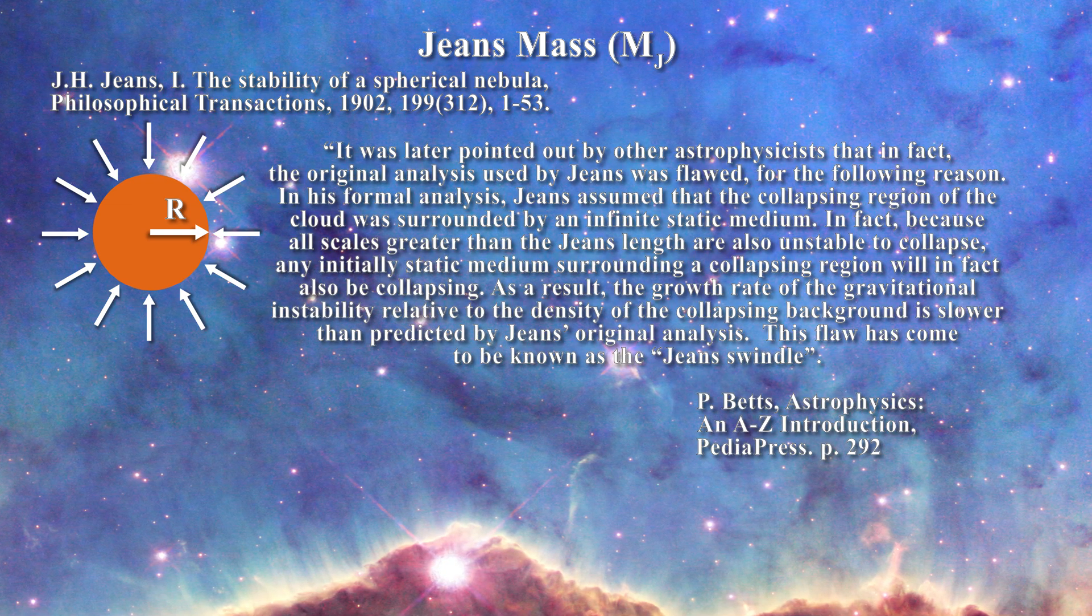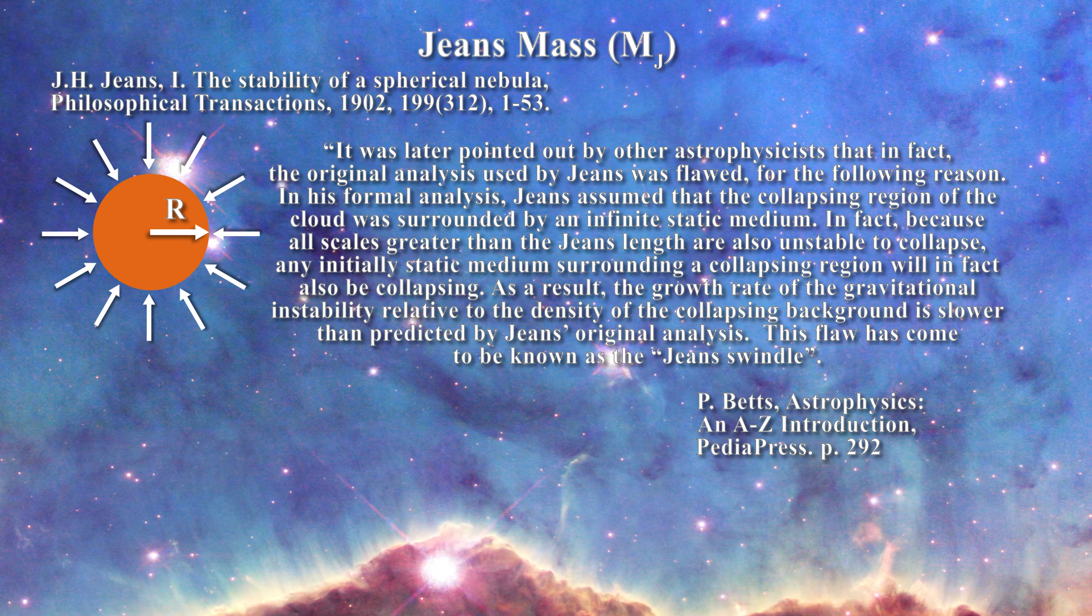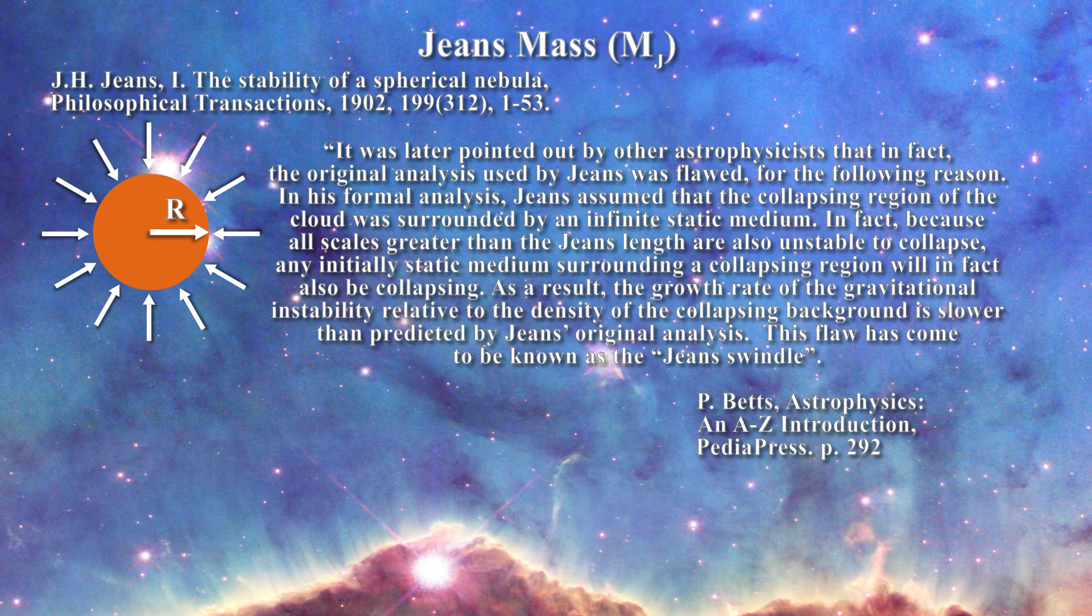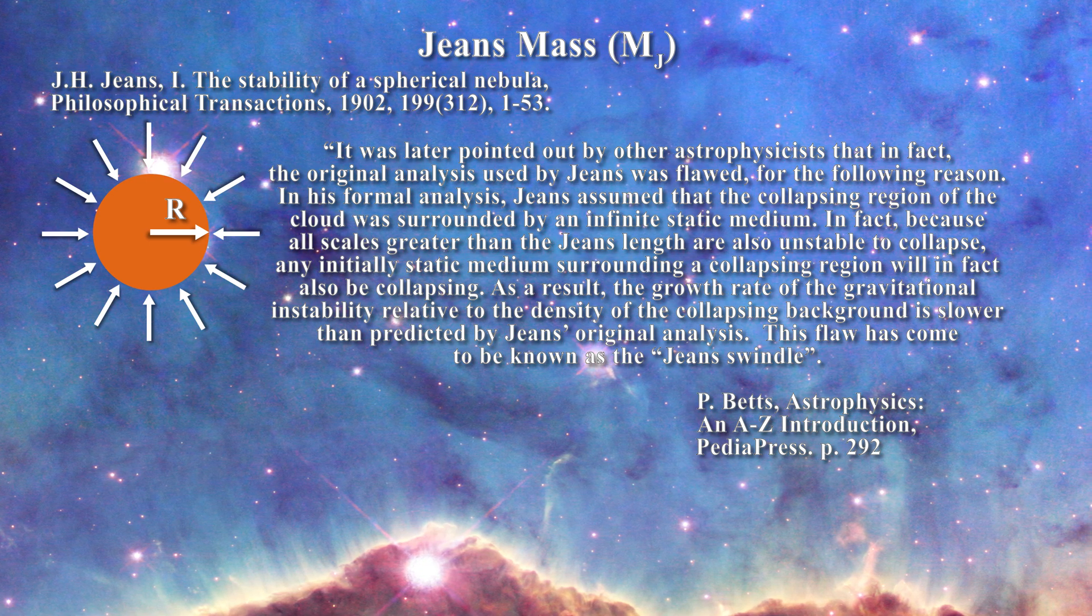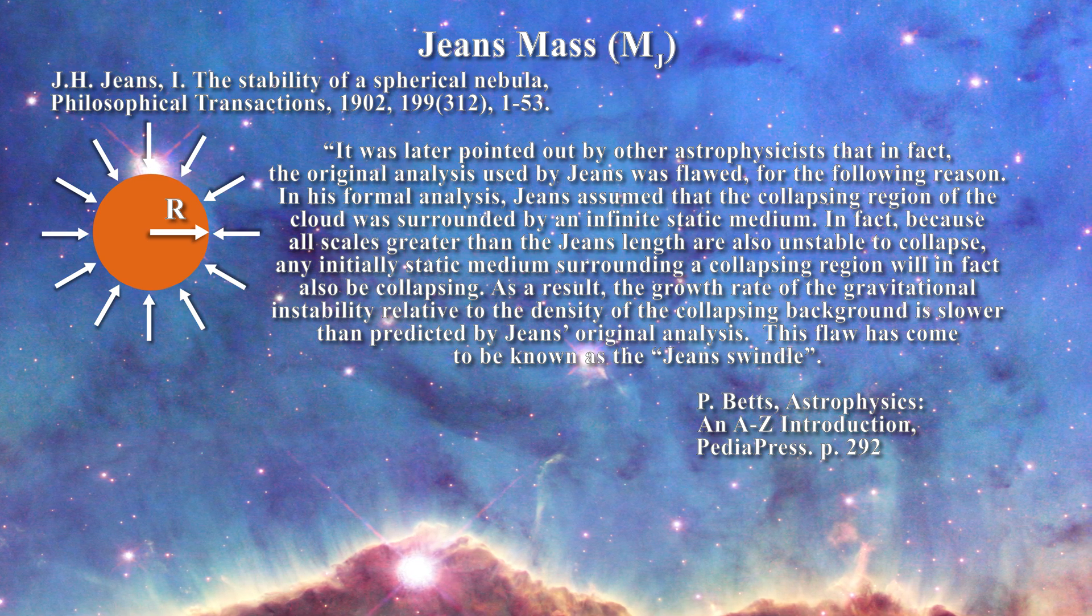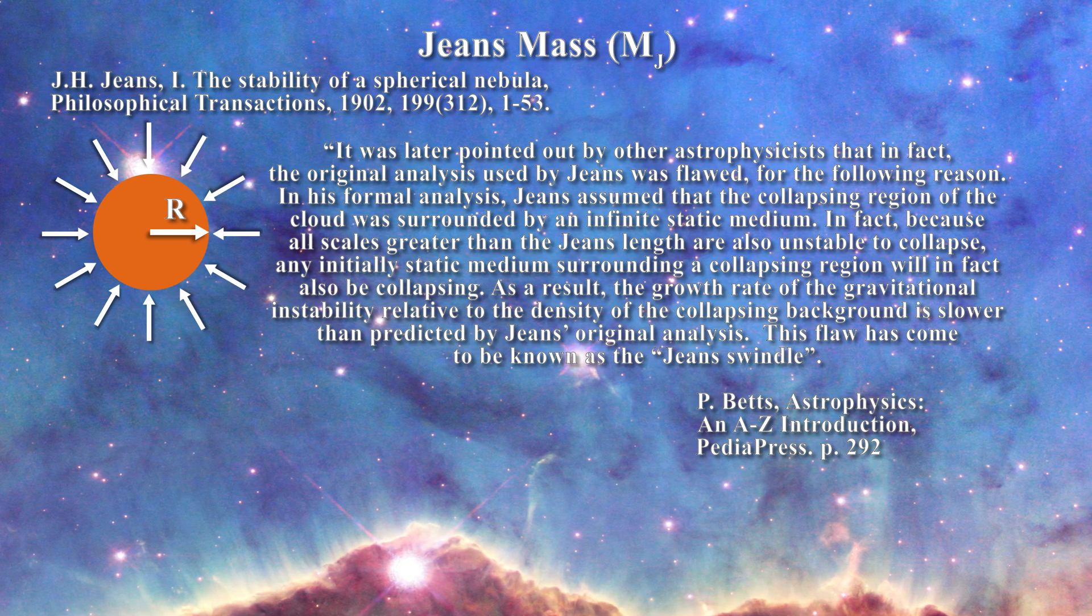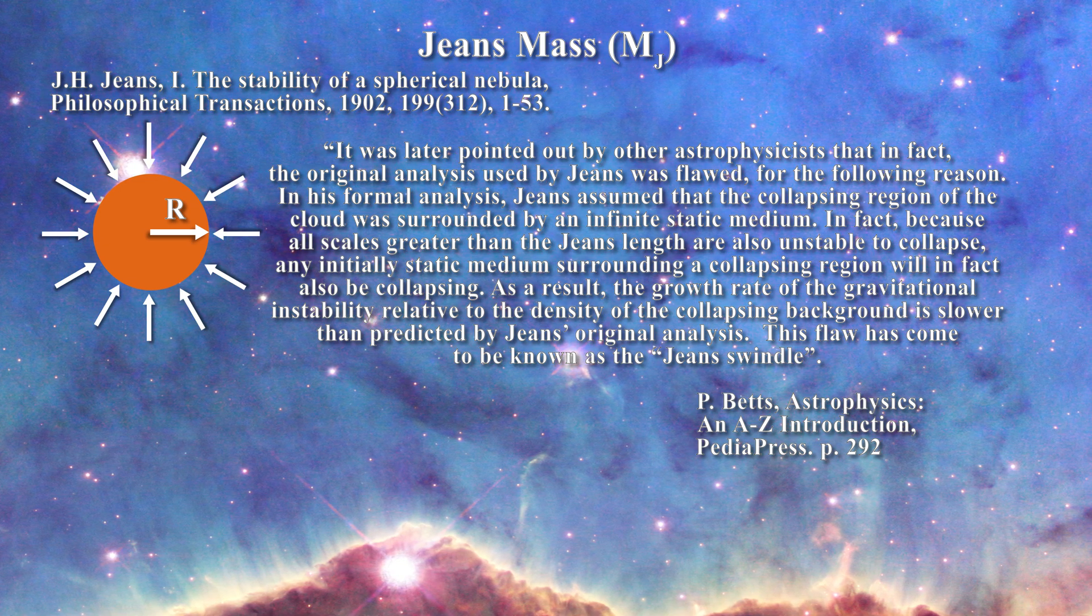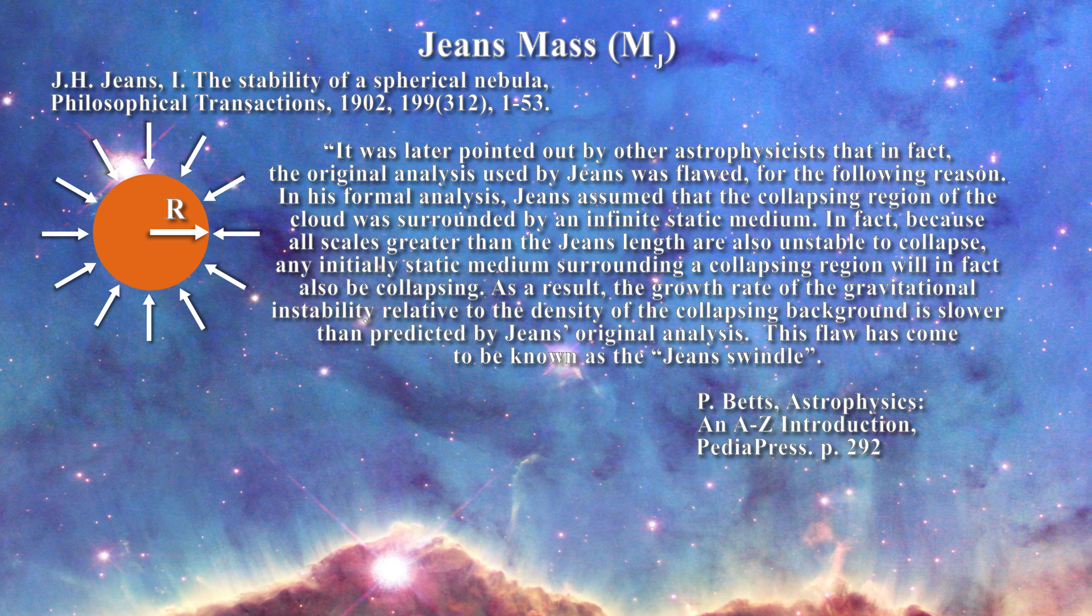Here is a quote: It was later pointed out by other astrophysicists that, in fact, the original analysis used by Jeans was flawed for the following reason. In his formal analysis, Jeans assumed that the collapsing region of the cloud was surrounded by an infinite static medium. In fact, because all scales greater than the Jeans length are also unstable to collapse, any initial static medium surrounding a collapsing region will in fact also be collapsing. As a result, the growth rate of the gravitational instability relative to the density of the collapsing background is slower than predicted by Jeans' original analysis. This flaw has come to be known as the Jeans swindle.